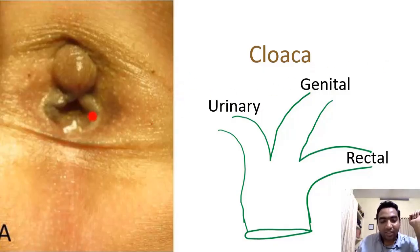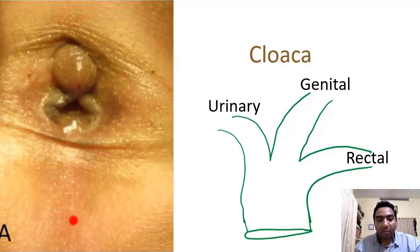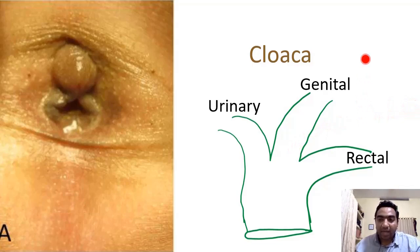This is a picture of a cloaca, which is a developmental abnormality where the urinary, genital, and rectal systems open into one single opening. You can see there is no anus for this patient — the urorectal septum is not properly developing.